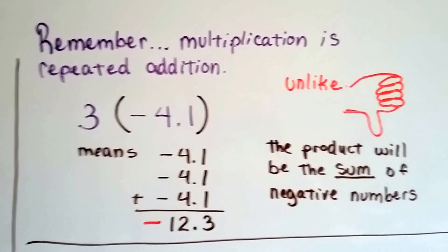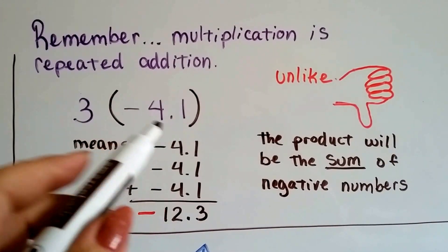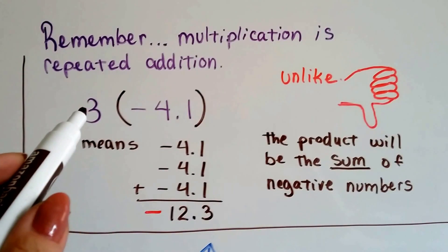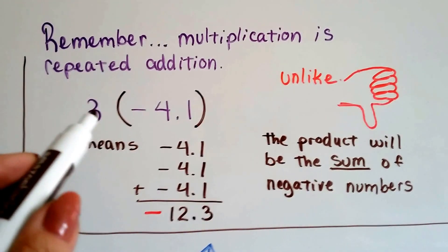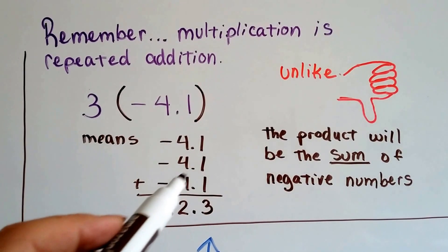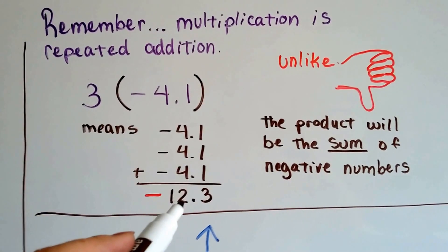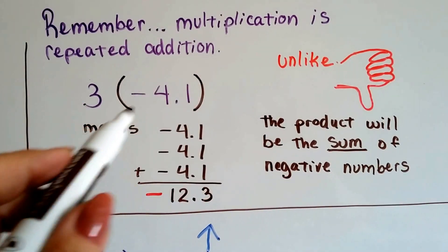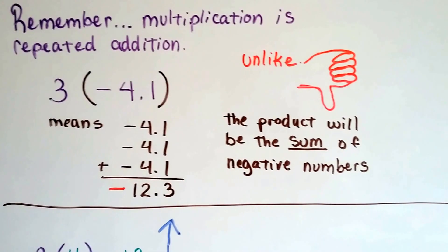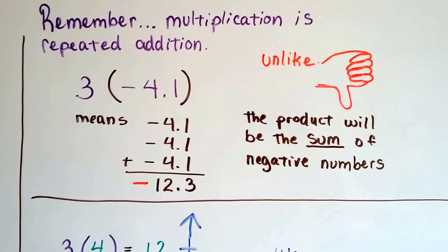So remember, multiplication is just repeated addition. If we have 3 times a negative 4.1, so here's a rational number in decimal form times a positive whole number here. All it means is negative 4.1 plus negative 4.1 plus negative 4.1. 1 and 1 and 1 is 3, 4 plus 4 plus 4 is 12. And because the signs are different, we have a negative sign. They're unlike, and the product will be the sum of negative numbers. So we have a negative 12.3.